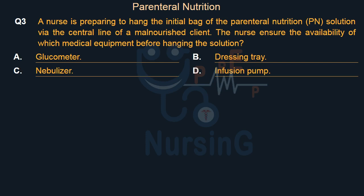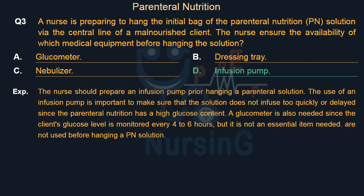Right answer is Option D: Infusion pump. The nurse should prepare an infusion pump prior to hanging a parenteral solution. The use of an infusion pump is important to make sure that the solution does not infuse too quickly or be delayed, since the parenteral nutrition has a high glucose content. A glucometer is also needed since the client's glucose level is monitored every 4–6 hours, but it is not an essential item needed before hanging a PN solution.